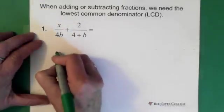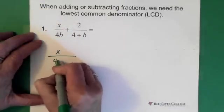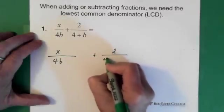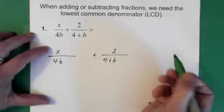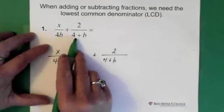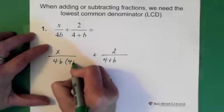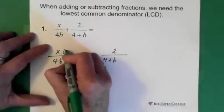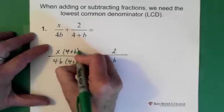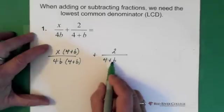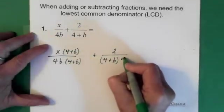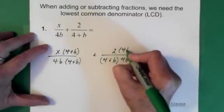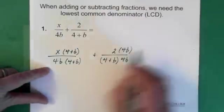So let's just rewrite this. So we have x over 4b and then we're adding it to 2 over 4 plus b. Now we're saying the denominator has to be 4b times 4 plus b. So then we just multiply it by 4 plus b. But if you multiply in the denominator by 4 plus b, you must multiply in the numerator by 4 plus b.